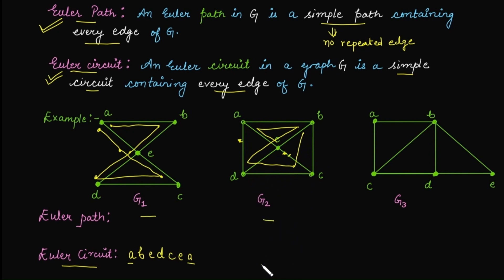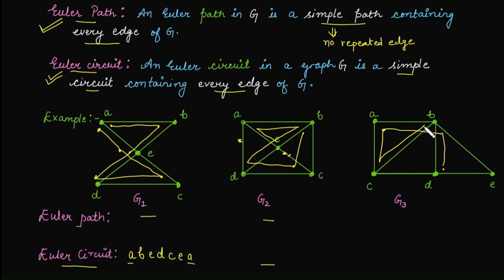There does not exist any Euler path or Euler circuit in graph G2. For G3, can you reconstruct it without lifting your pen? Starting from vertex D: D to B, then A, C, B, E, D, and to C. There exists a path that covers each and every edge, and the starting and ending points are different, so G3 has an Euler path.